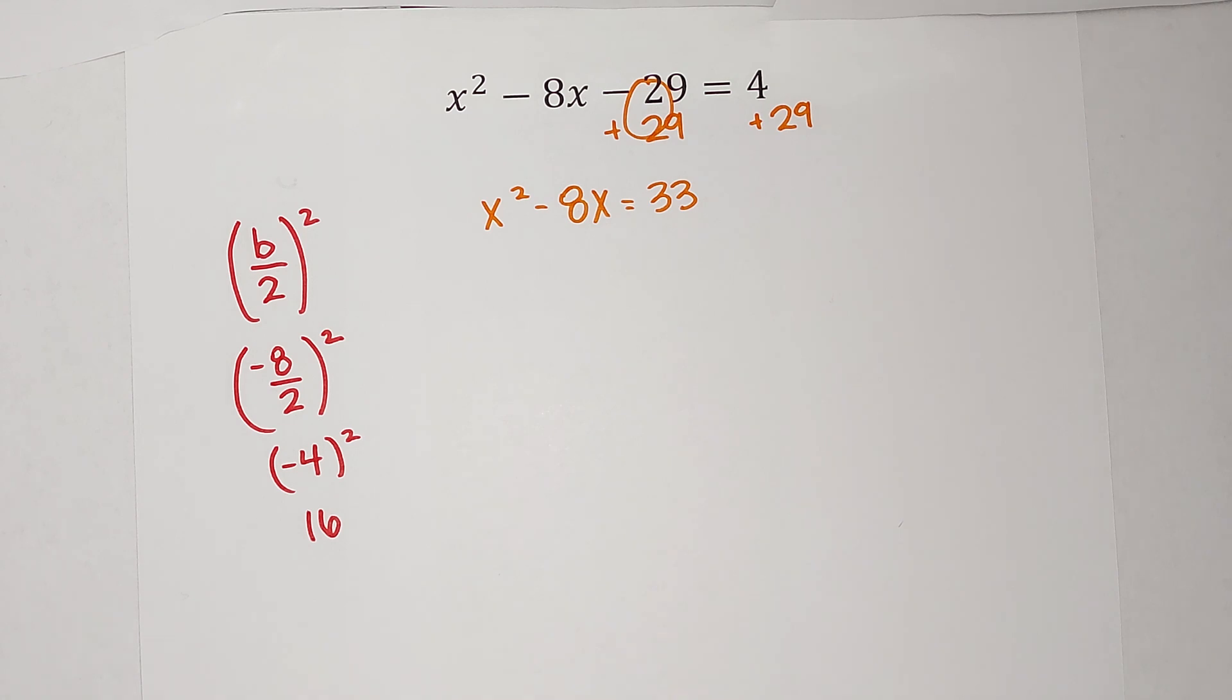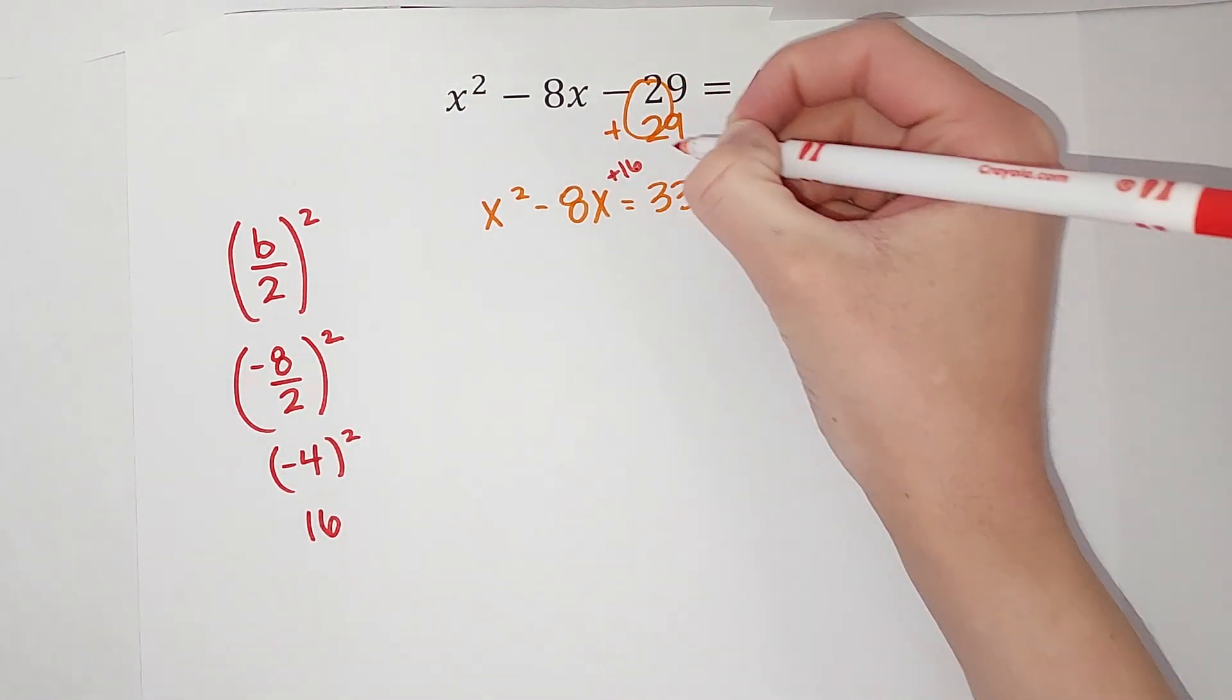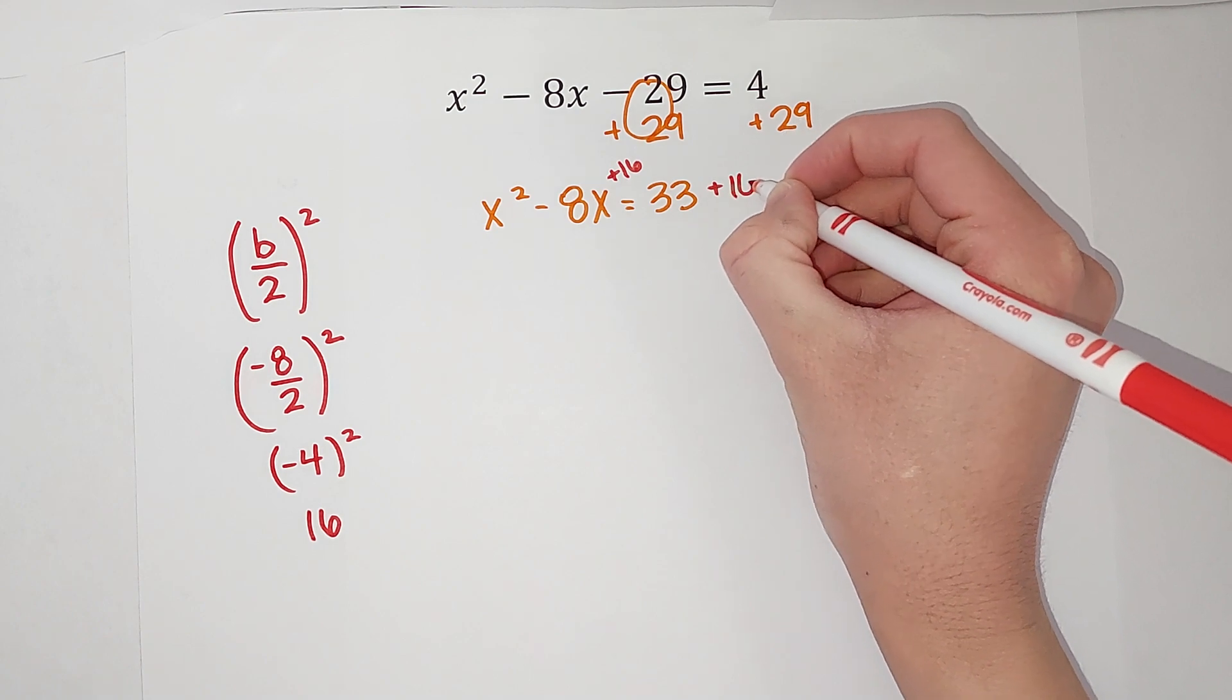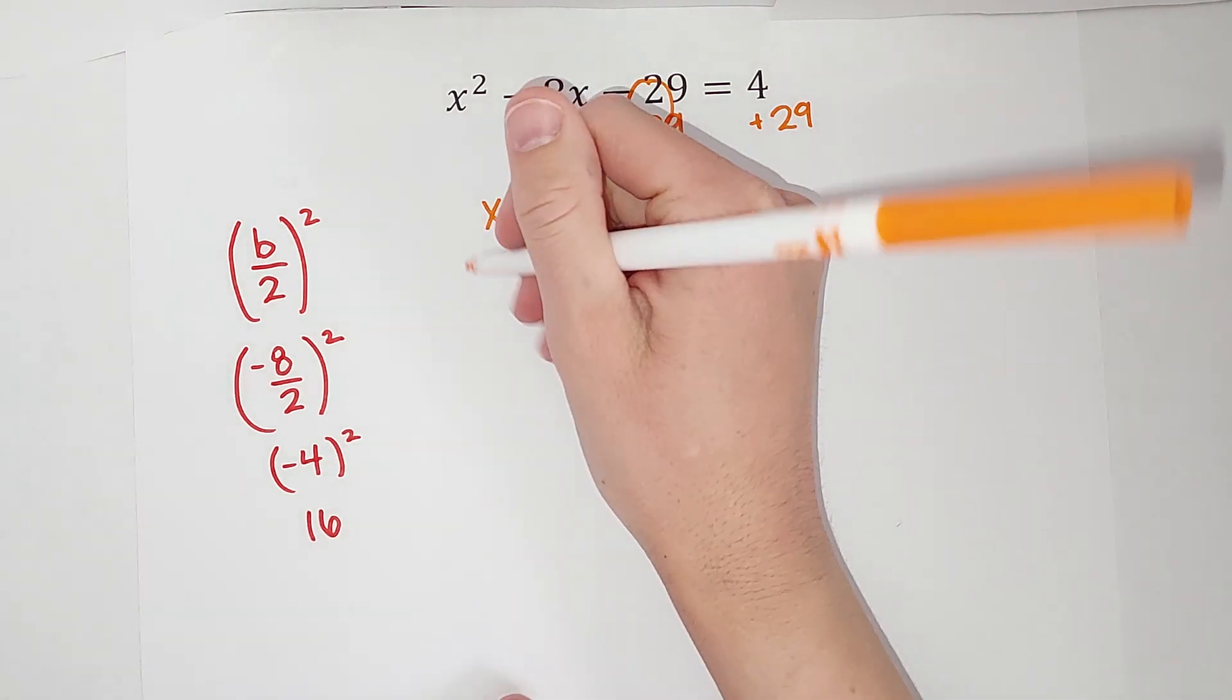So now watch what happens when I add 16 to both sides. I'm adding 16 here and here. I can do this as long as I do it to both sides. I can add, subtract, multiply, divide as long as I do it to both sides. But because I figured out this b divided by 2 squared was 16, I believe that adding 16 to both sides will help me solve this somehow. On this side I'm left with x squared.